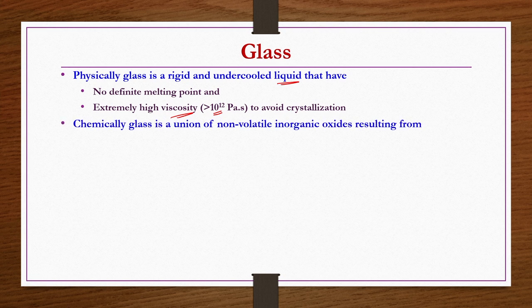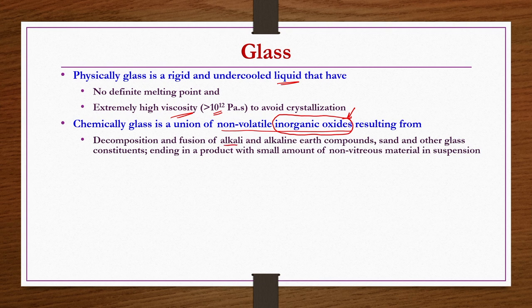Chemically, glass is a combination of non-volatile inorganic oxides. It is a union of non-volatile inorganic oxides resulting from decomposition and fusion of alkali and alkaline earth components, sand, and other glass constituents, ending in a product with a negligible amount of non-vitreous material in suspension — mostly it is vitreous.